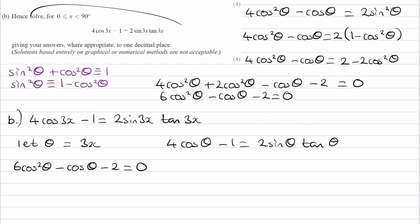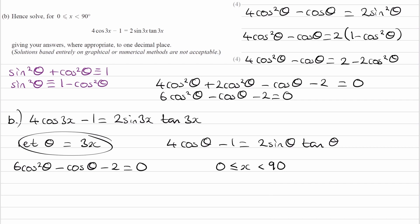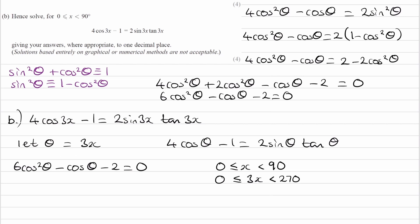We know from the question that our domain is 0 to 90, so x is between 0 and 90. We have theta in our equation, and theta equals 3x, so we want to get our domain in terms of theta. I'm going to multiply everything by 3. So this becomes 0 is less than or equal to 3x, which is less than 270. Since 3x is the same thing as theta, theta is between 0 and 270. So we now solve this equation in this domain.